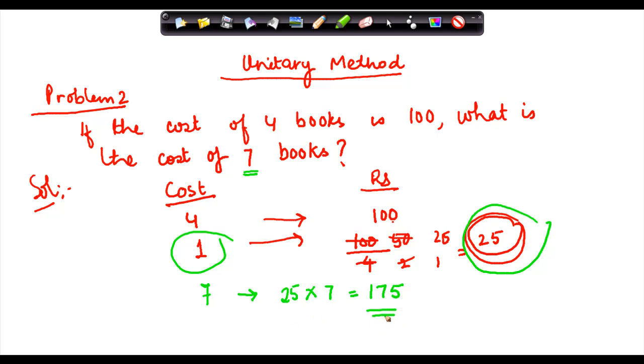Again, the methodology was simple. I found out the cost of one book by dividing hundred by four. Once I got the cost of one book, finding out the cost of seven books was a simple multiplication job.